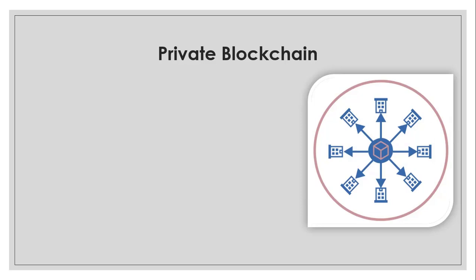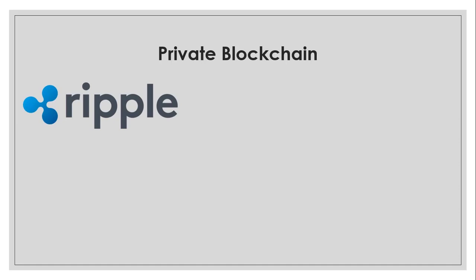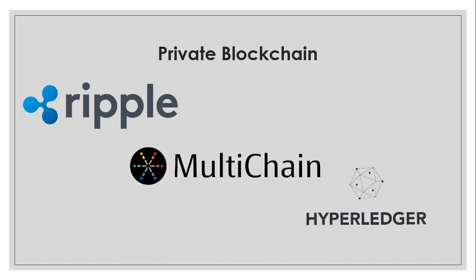The second type is private blockchain. Private blockchain is not open to the public — it is only open to a group of participants who have decided to share the ledger among themselves. These are restrictive or permissioned blockchains, operated only in a closed network, typically used within a company or organization. Examples of private blockchain include Ripple, Multichain, and Hyperledger.